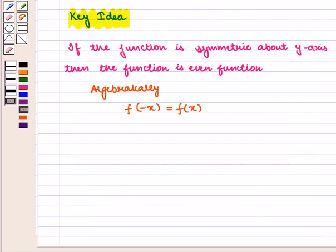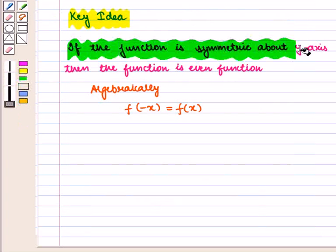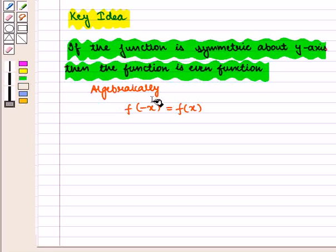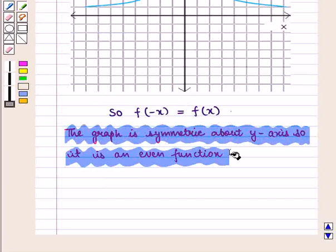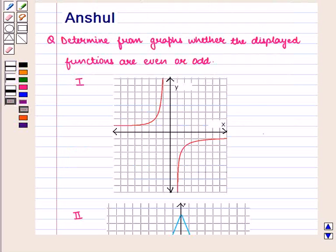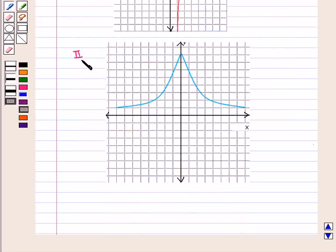From the key idea we know that if the function is symmetric about the y-axis then the function is an even function, and we have f of minus x is equal to f of x. Thus we have seen that the graph is symmetric about the y-axis, so it is an even function. So we have seen that graph 1 is of an odd function and graph 2 is of an even function.